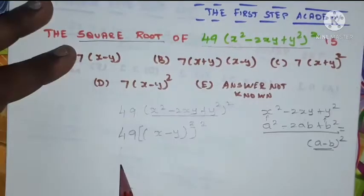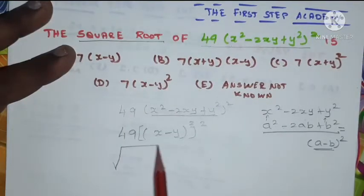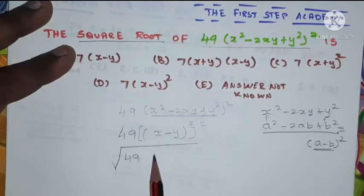Now we need to take square root of the value we found. So square root of 49...